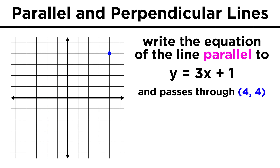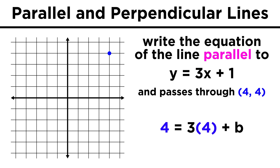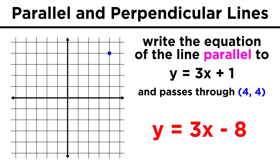Some questions will require that you be a little more specific. You could be asked to find the equation of a line that is parallel to y equals three x plus one and goes through the point (4, 4). Well, if it's parallel, we know it has a slope of three, so y equals three x plus b. Now we can plug in the coordinates for the one point we know. So four equals three times four plus b, and if we solve for b, we get negative eight, so the equation must be y equals three x minus eight.